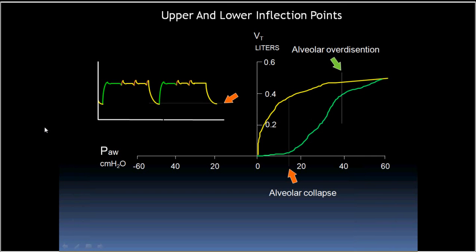An important point: the lower CPAP (P-low) should be one to two centimeters of water above the lower inflection point in order to keep the alveoli open during expiration. This way the alveoli are still kept open during exhalation and will not close — the shear force is avoided. Dependent alveoli should remain open and should not be left to collapse, especially if the lung is diseased.